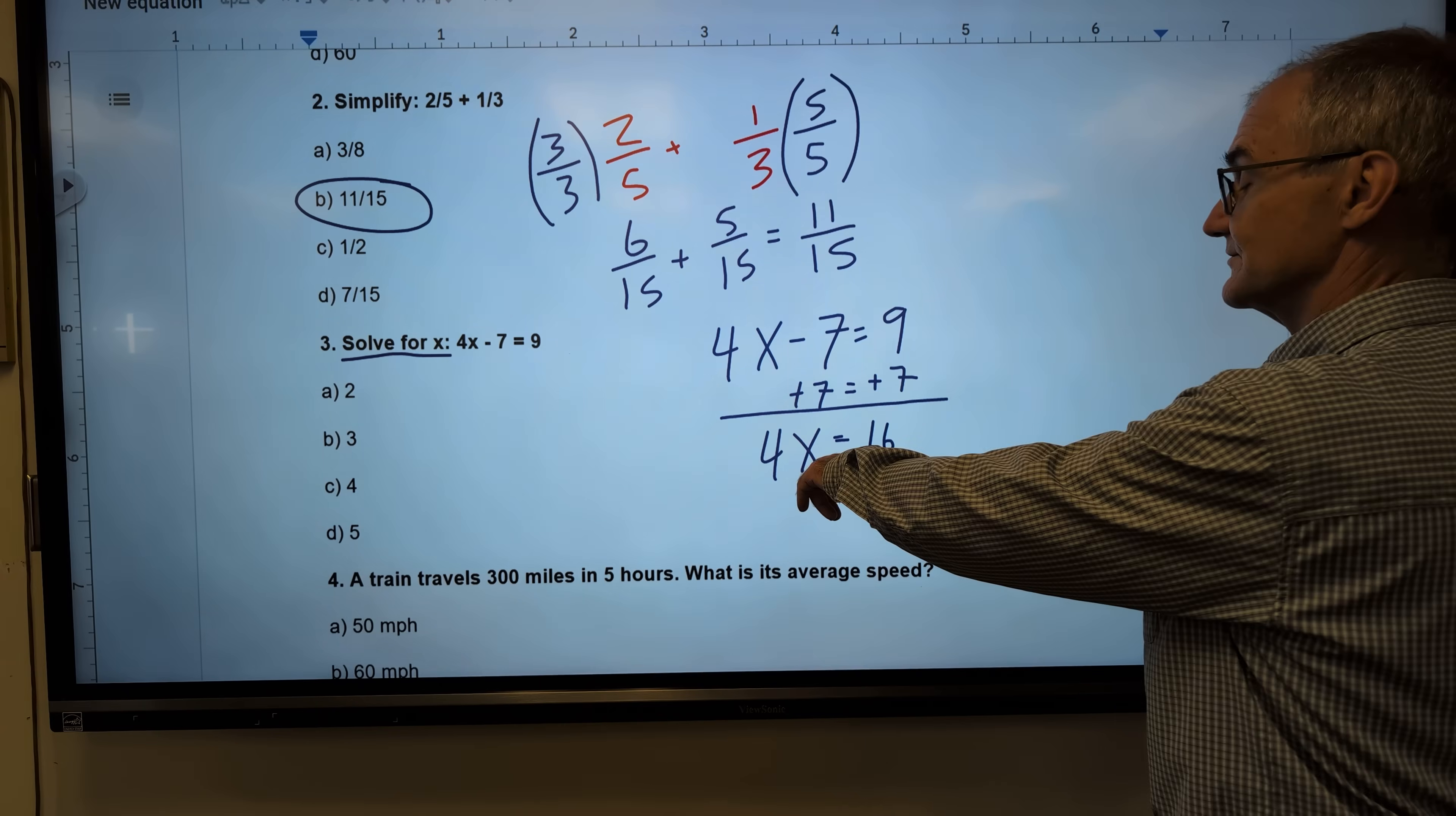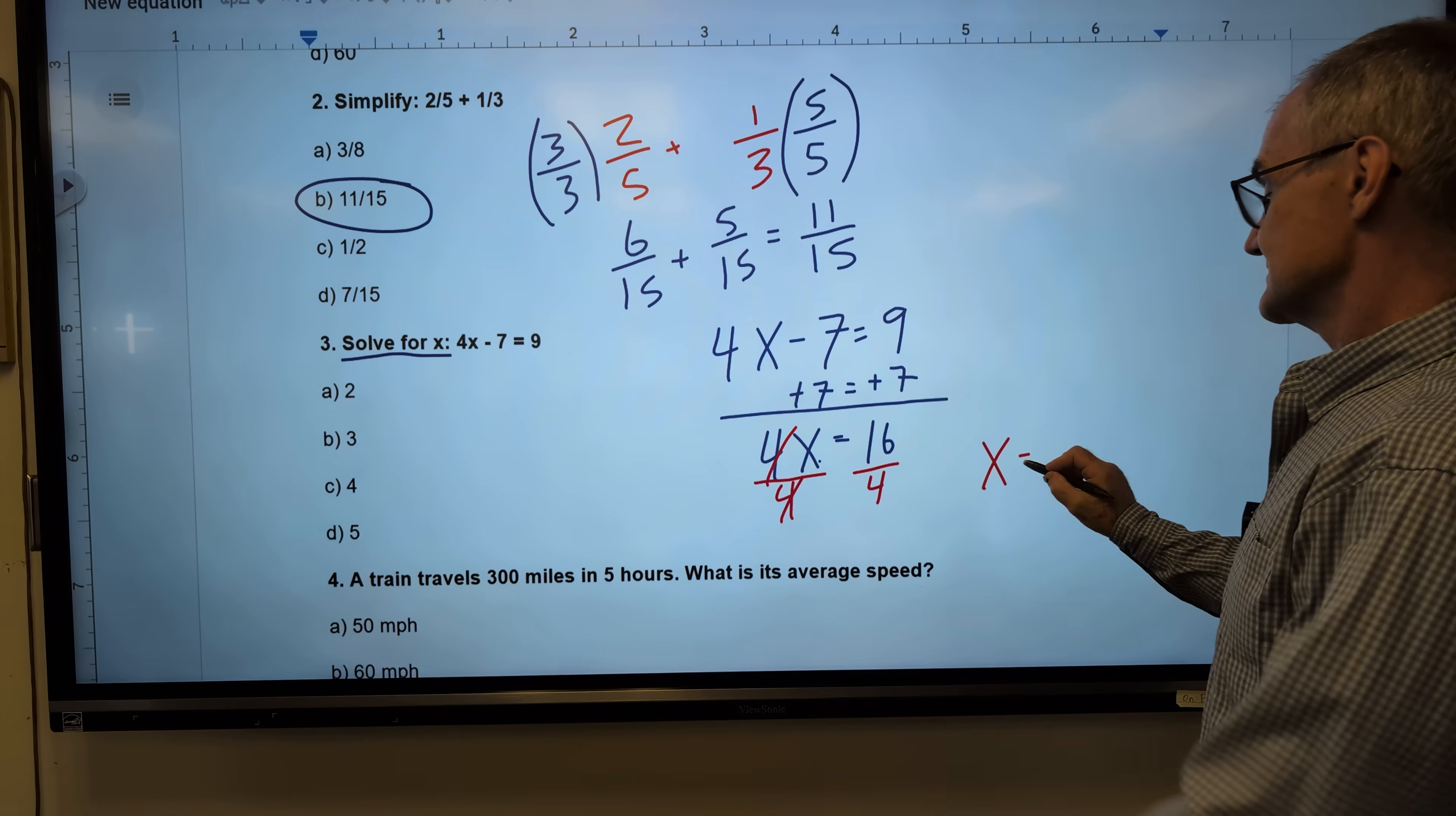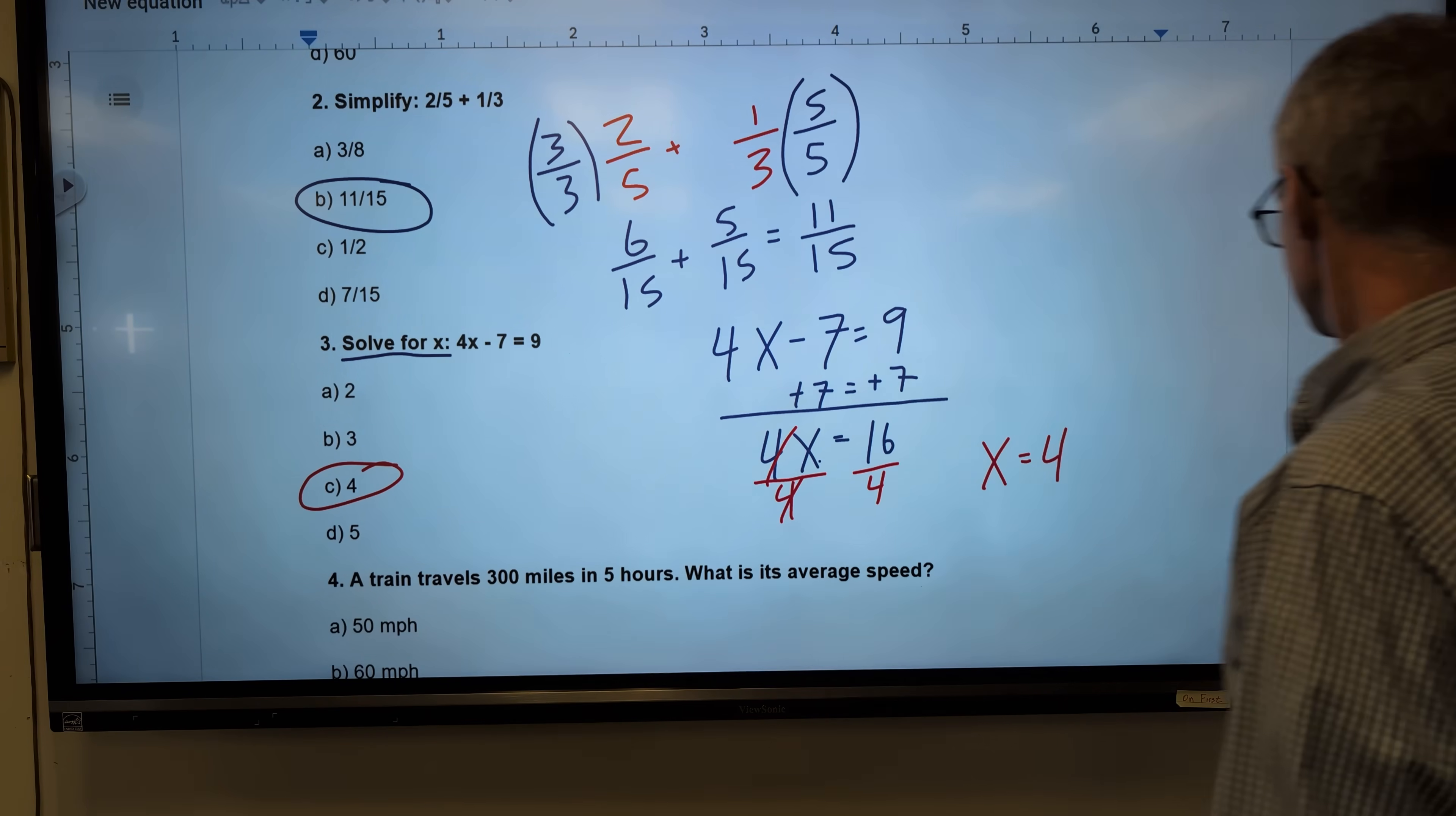Still solving for x. I am multiplying by 4. I reverse that by dividing by 4. These cancel. It gives me x by itself. 16 divided by 4 is 4. x is equal to 4. Correct answer. Answer C right there.